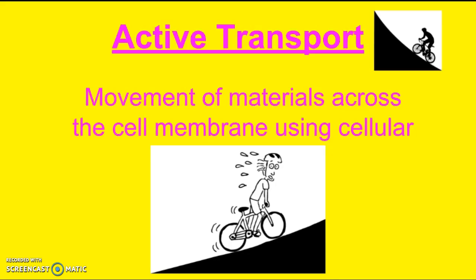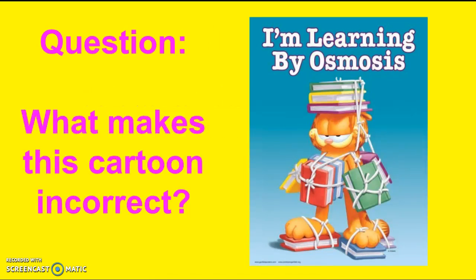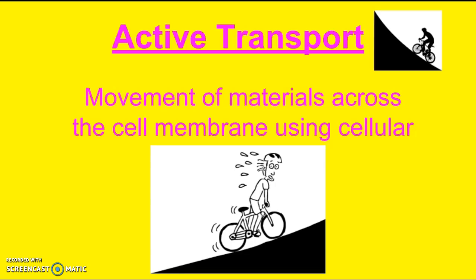Next, we have active transport. Active transport is the movement of materials across the cell membrane using cellular energy. You can think of this as like riding a bike uphill — if you're going uphill, you have to pedal and exert energy to overcome gravity and get up the hill. That's exactly what active transport is. You would use active transport when you're trying to move particles from a lower concentration into a higher concentration. Normally those particles would want to move to the lower side, but sometimes you have to get stuff from the lower end to the higher end, so you have to exert some energy — that's when you use active transport.